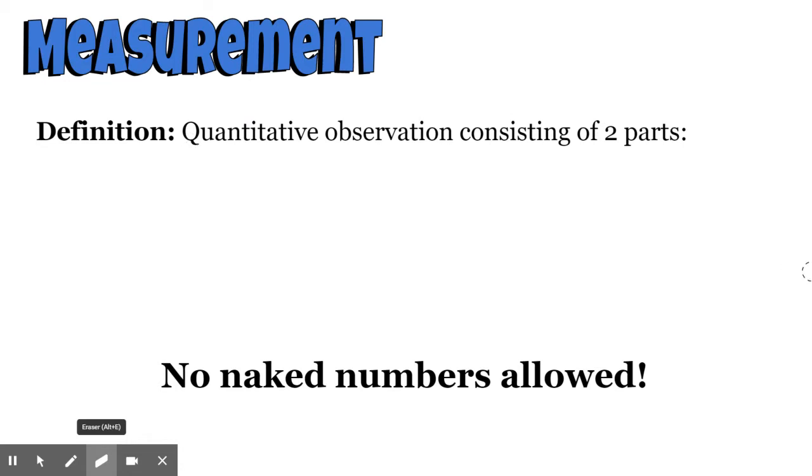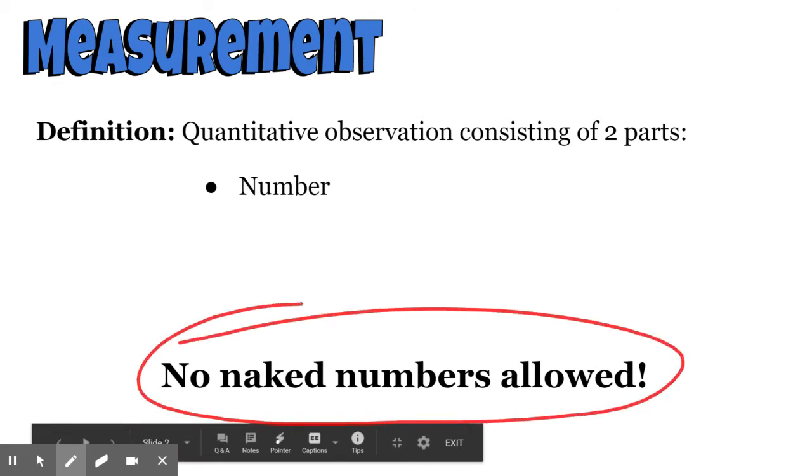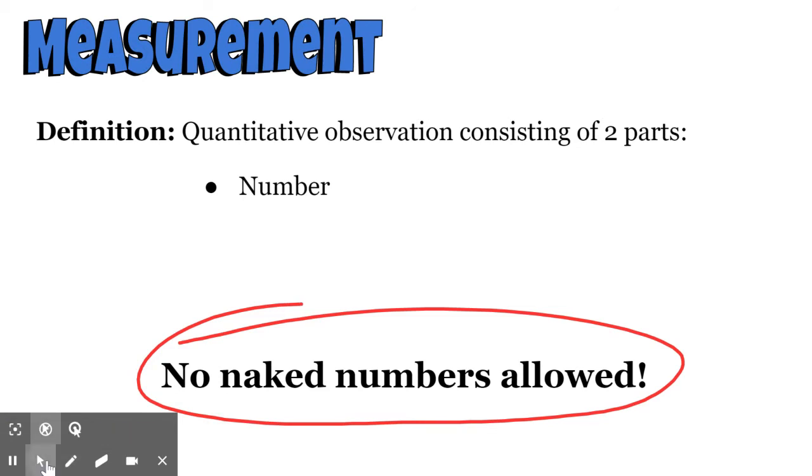The first thing is there's going to be a number: 6, 5, 2.5, 74, 108.7. There's going to be a number associated with this. Down at the bottom, you can see this phrase, no naked numbers. What does that mean? That means the number has to have some sort of label. You can't just have a bare number.